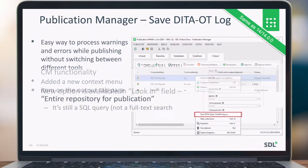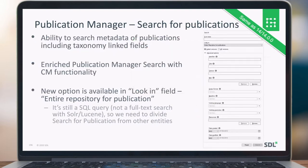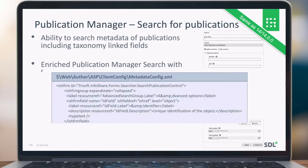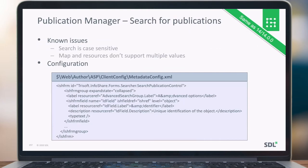For Publication Manager search, you no longer need to switch to the web client, because you can now search for publications including taxonomy-linked fields. There is also a new 'look in' option that allows searching the entire repository for publications using a SQL query on the database rather than the Solr Lucene search engine. Note that search is case-sensitive and maps and resources don't support multiple values at the moment. This is configured in the metadata config as well.